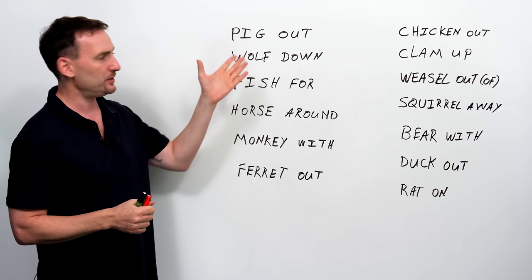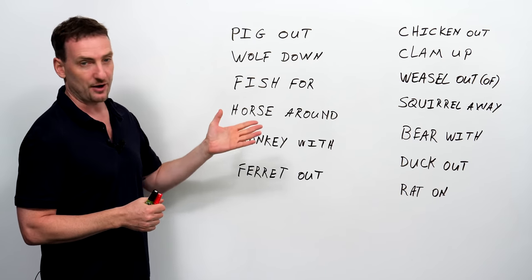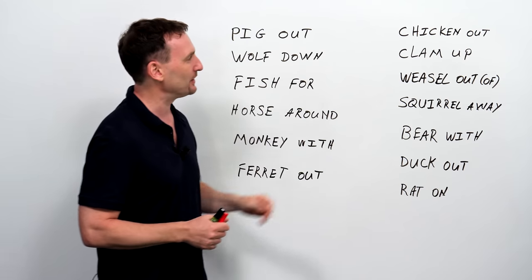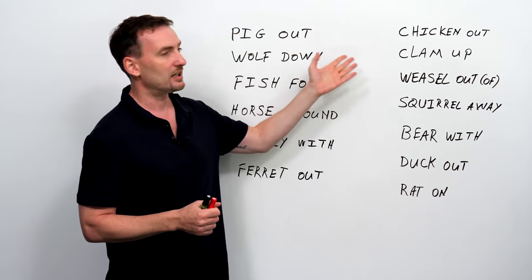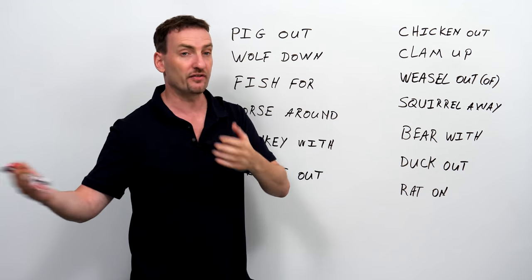We're going to look at pig out, wolf down, fish for, horse around, monkey with, ferret out. Ferret is an interesting animal. Chicken out, clam up, weasel out, usually weasel out of something.